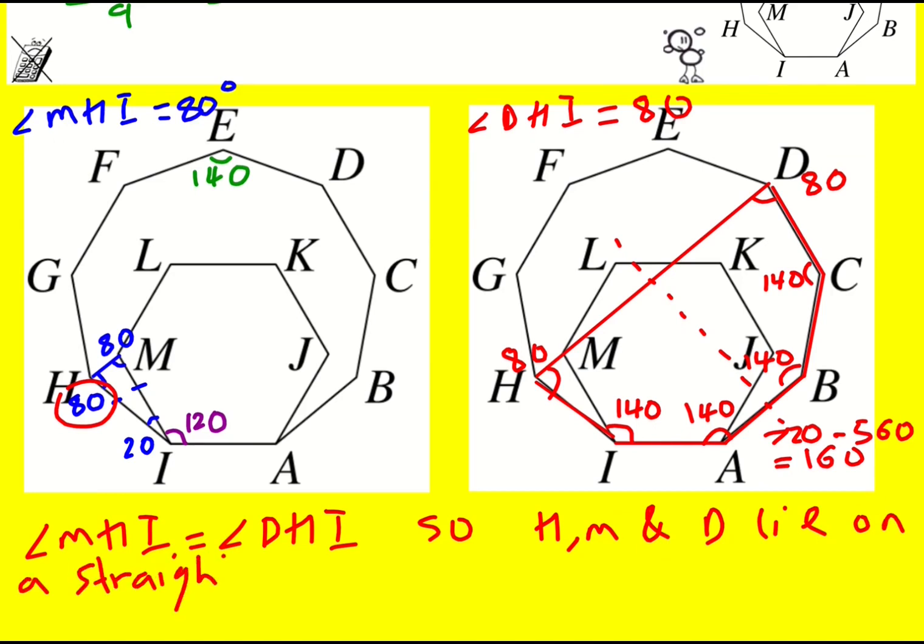No other explanation needed. Hopefully it makes sense. If we're going from D to H to I and we turn 80, and then we're going M to H to I and we turn 80, it must be that along the way from D to H we pass through M. They must be on a straight line. Okay, nice approach to this problem.